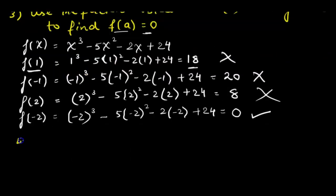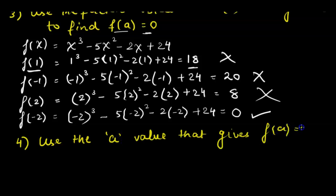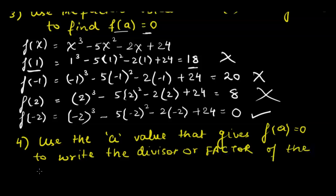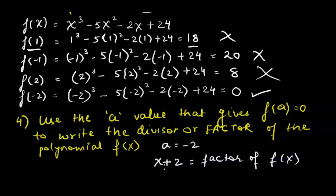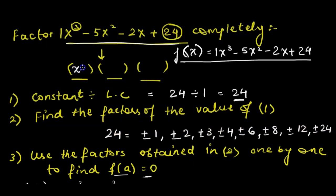Once we get the required value of a, we proceed to step four: use the a value that gives f(a) = 0 to write the divisor, which is a factor of the polynomial. In this example a = −2, and since a = −2 then x + 2 should be a factor of f(x) — we always put the number back with x using the opposite sign. So the first bracket's answer is x + 2.